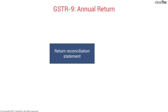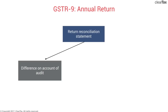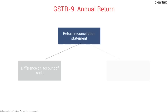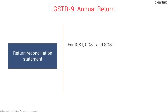The difference between the figures as per your return and as per your audited profit and loss could be because of two reasons. First, the difference could be on account of audit entries that have been passed. The second reason, not related to audit, is that the difference could be on account of an assessment order or a refund claim. An assessment order is initiated by the tax department when they find you've short paid tax, while a refund claim is initiated by you the taxpayer to claim refund for any excess tax paid.